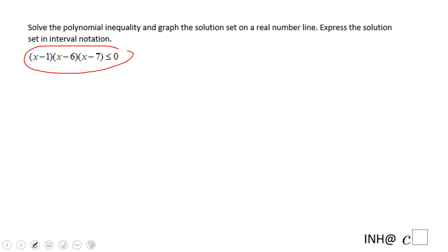So the first thing you want to do is set up this polynomial equals to zero to find out where this polynomial is equal to zero. That will be at x equals one because x minus one equals zero means x equals one, and x equals six and x equals seven. These are the three values where the polynomial is equal to zero.